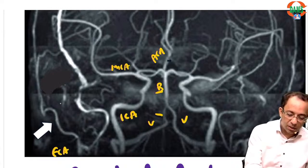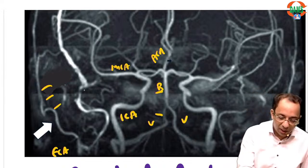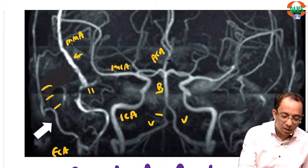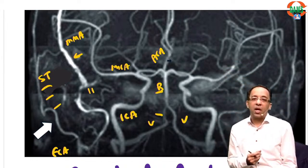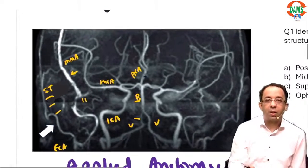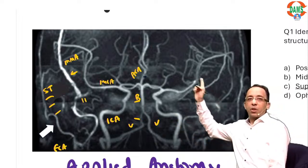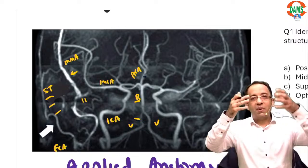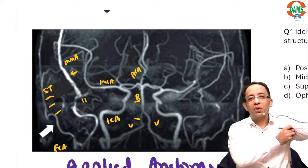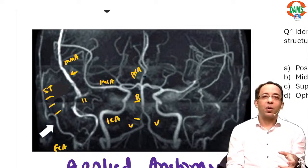This appears to be the superficial temporal branch of the external carotid artery, and this looks like the maxillary artery division giving rise to the middle meningeal artery. The twist was that they showed an MR angiogram — which invariably in every exam is asked about cerebral circulation — but this time they asked about the external carotid artery division, which is very unlikely. That was the twist.